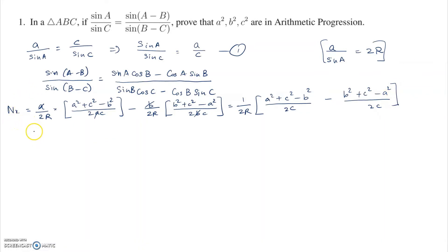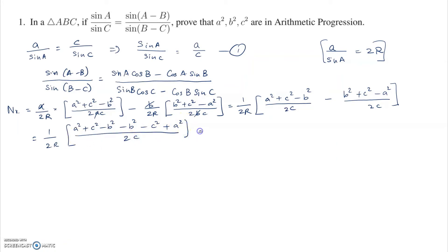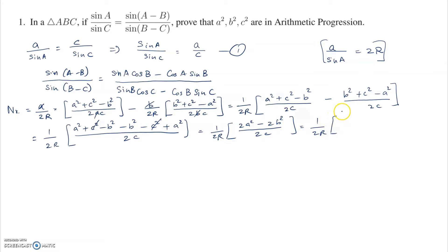That equals 1 by 2R outside, with (a squared plus c squared minus b squared minus b squared minus c squared plus a squared) divided by 2c, which simplifies to 1 by 2R into (2a squared minus 2b squared) divided by 2c, giving 1 by 2R into (a squared minus b squared) divided by c.